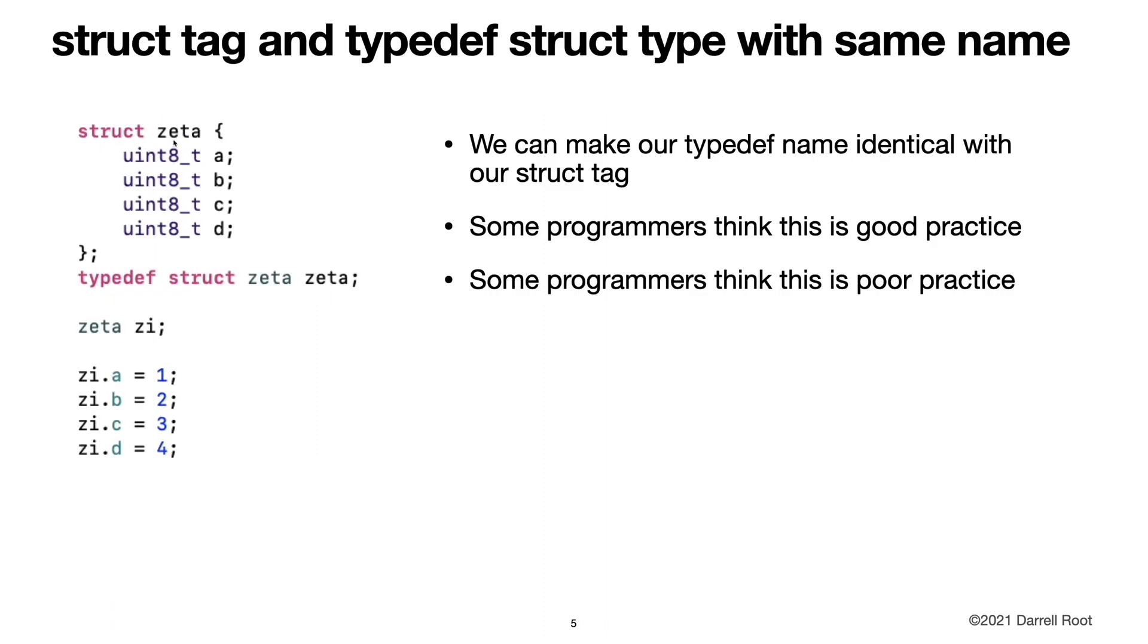Here we have a struct with a struct tag of zeta. And then we use typedef to make the typedef name zeta identical to the struct name zeta. Some programmers think this is good practice. Some programmers think it's poor practice to use the same name for two different identifiers in two different namespaces. In any event, once we do that, then we can use our new type zeta to create a variable.